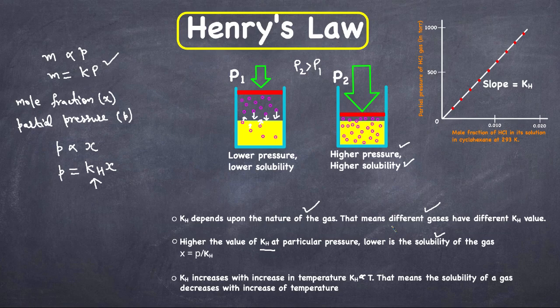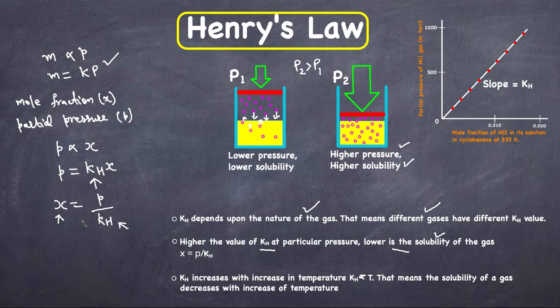Another interesting thing is: higher the value of kH at a particular pressure, lower is the solubility. If we rewrite the equation, x = p / kH, where x is the mole fraction used as a measure of solubility. So if the value of kH increases, the value of x decreases — meaning lower solubility.